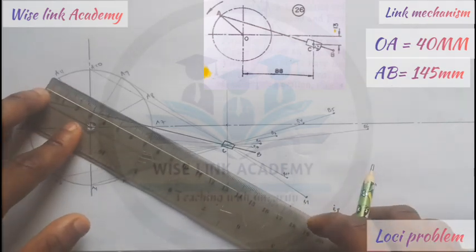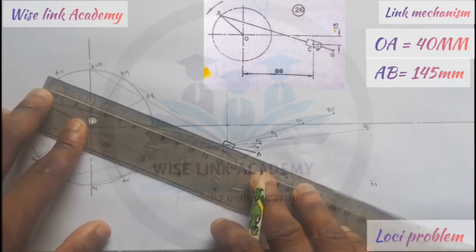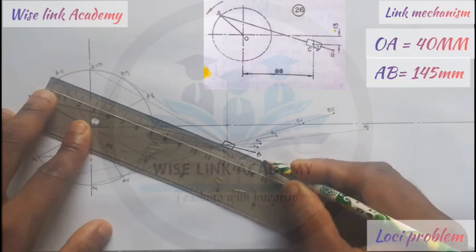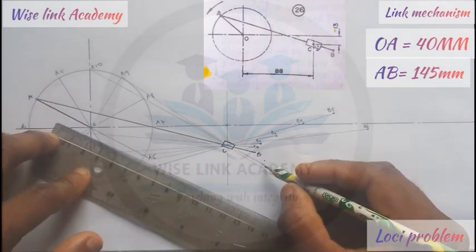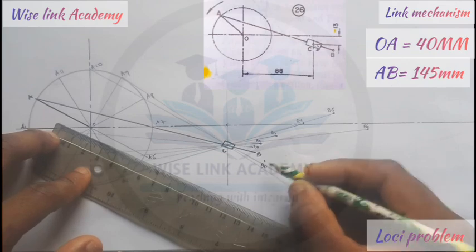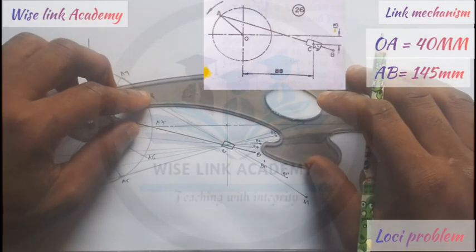Finally, I'll have A11 — passes through C. A11 to C touches 14.5 at this point. Here is my B11. So with my French curve, I will join these points together. If I join the points together, I'll have something of this nature. Let's go.